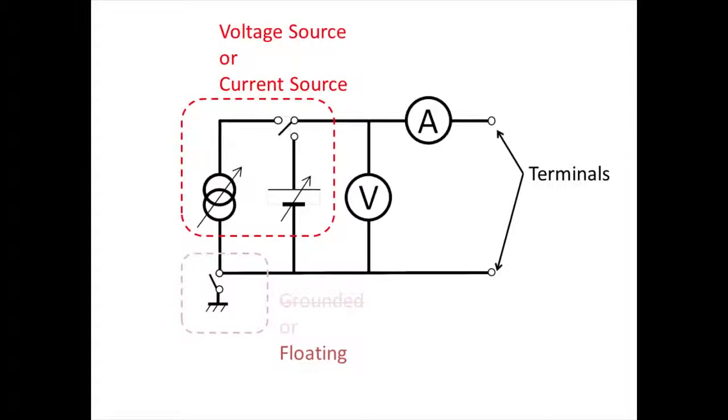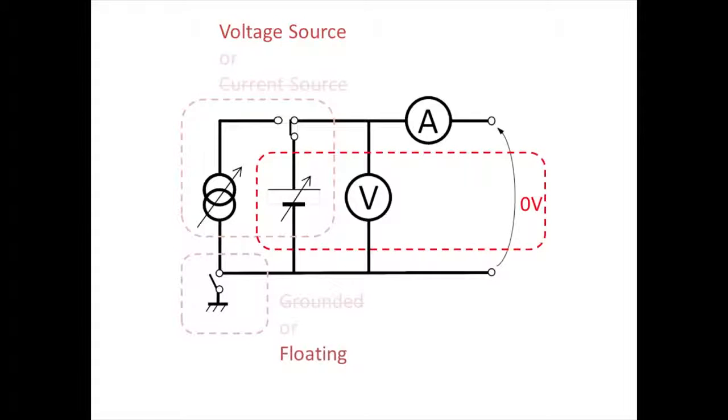SMU has two source modes. One is a voltage source, the other is a current source. The source mode is set to voltage source. The voltage source is set to zero volts. This electric circuit is equivalent to an ideal ammeter.